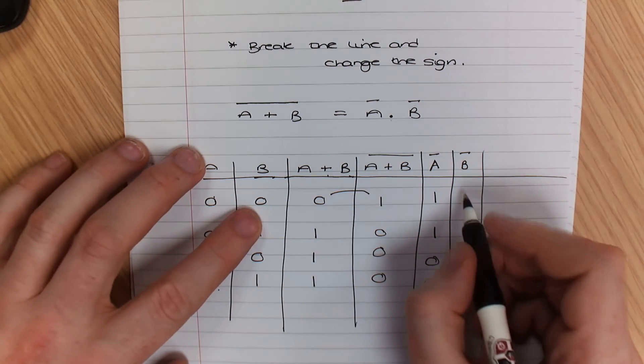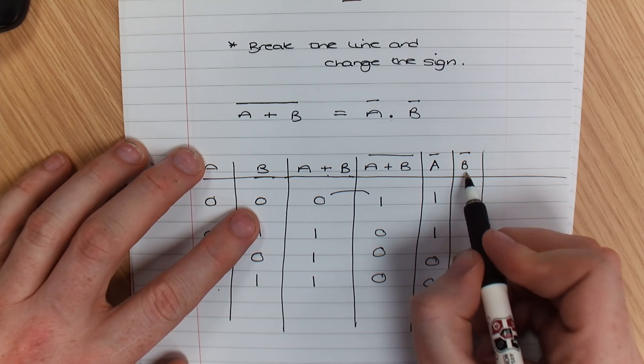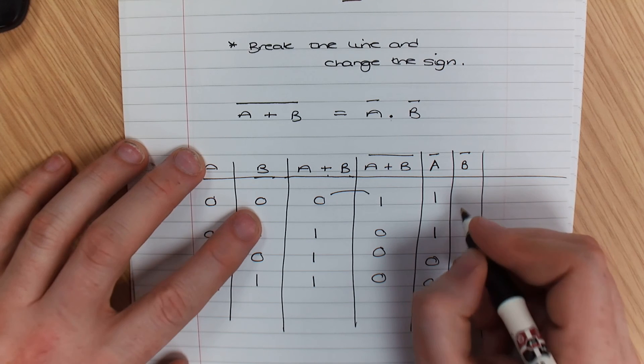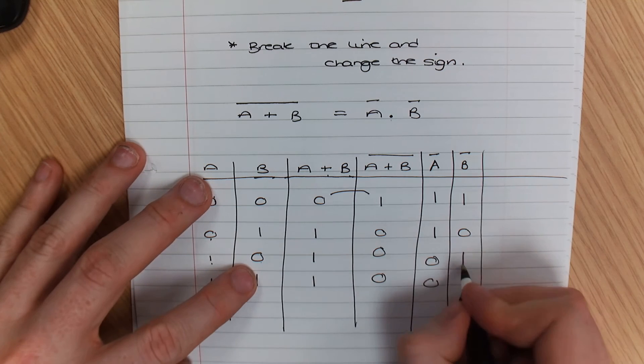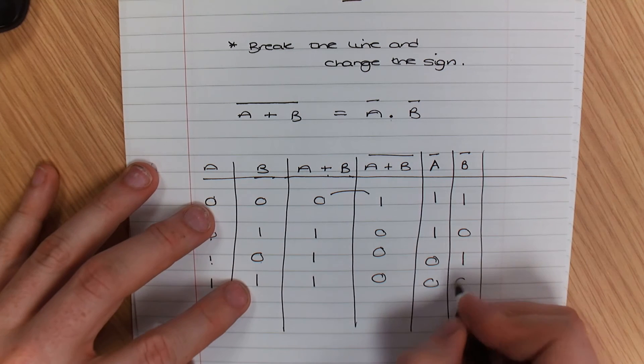Now, not B. Not B is 1, not B is 0, 1, 0.